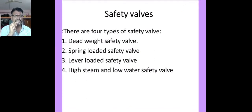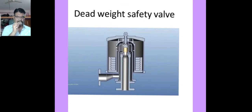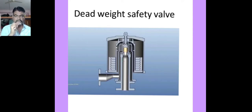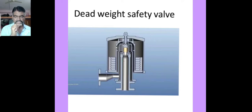There are different types of safety valve: dead weight safety valve, spring loaded safety valve, lever loaded safety valve, and high steam and low water safety valve. The dead weight safety valve is mounted on the boiler shell with a bottom flange. It consists of a gun metal valve mounted on a gun metal seat, with a vertical cast iron pipe through which steam pressure acts. A weight carrier is provided with cylindrical discs of weight and a cover plate. The steam pressure acting upward is balanced by the combined load of the dead weights, weight carrier, and cover plate.